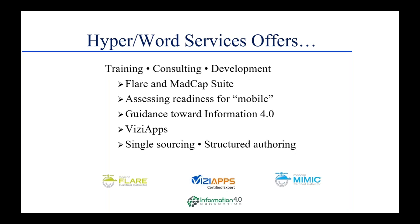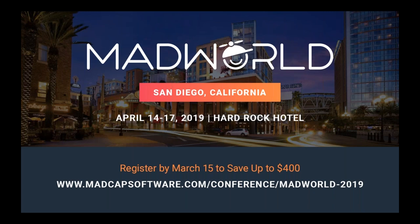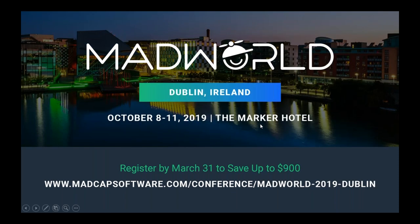With that, we pass it to Jennifer. Neil, thanks so much — that was terrific. We have some good questions that have come in. Before we turn to those, just reminding everybody: Mad World is around the corner, San Diego, April 14th through the 17th. If you haven't yet registered, you have until the 15th of this month to save up to $400. Our discounted room block at the Hard Rock is down to the last couple of rooms. And shortly after, in the fall, we're heading to Dublin for Mad World Europe, October 8th through 11th, with an early bird discount of up to $900 through the 31st.